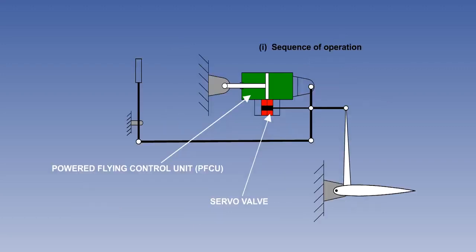In a power assisted flying control system, the power flying control unit, referred to as a PFCU, provides most of the force necessary to reduce the hinge moments. The pilot normally provides only the remaining force.